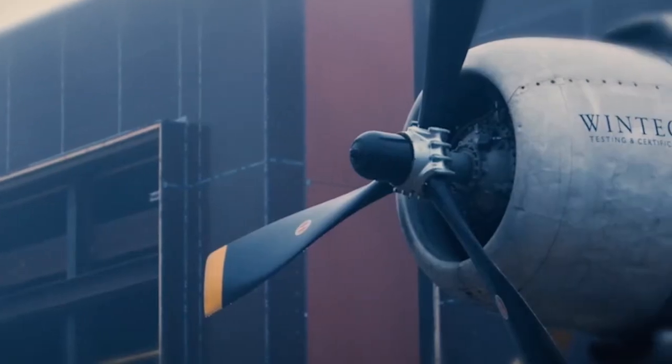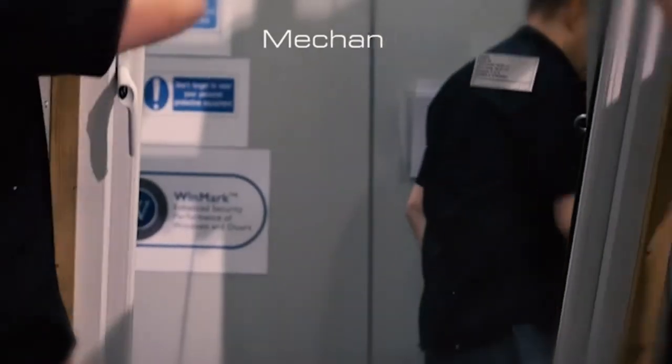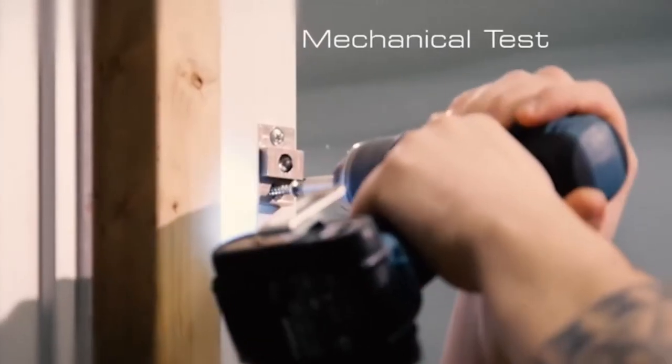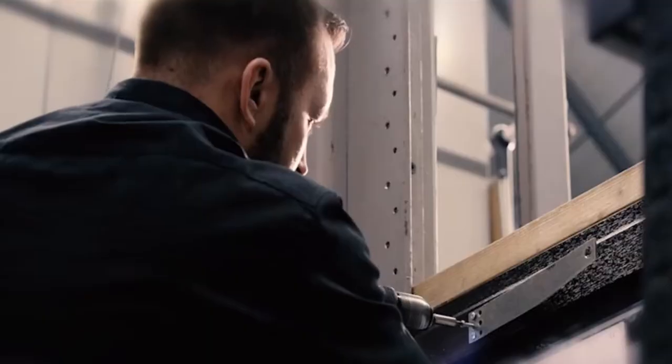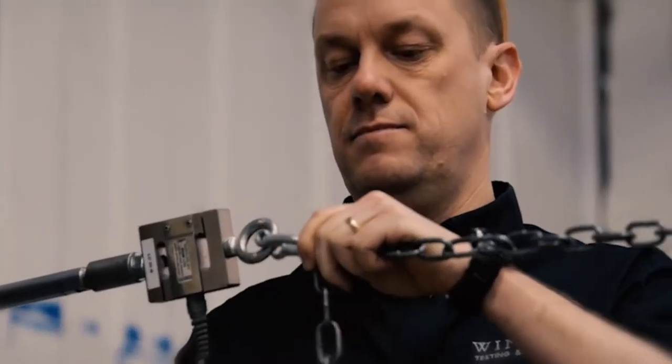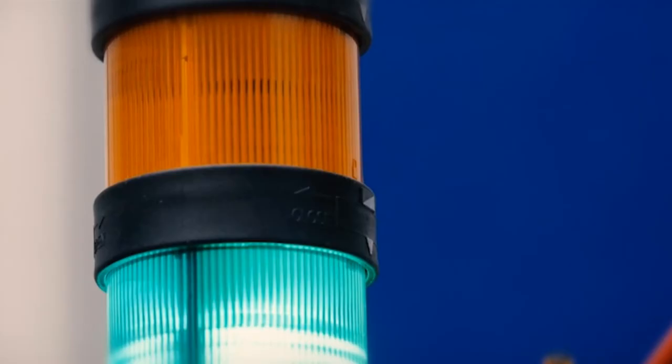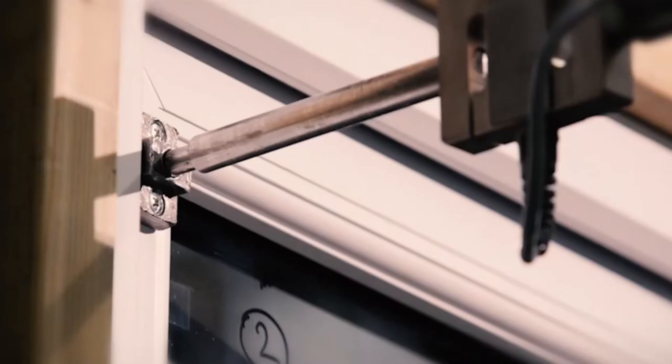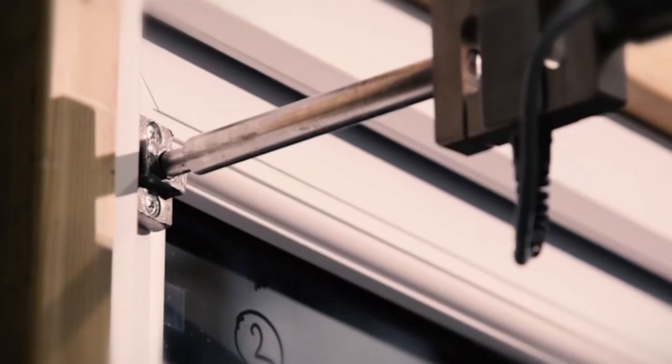Next up, Everest worked with the independent testers Wintech to run a few more rigorous tests. These guys really know how to put things through their paces using special equipment that piles on the pressure. To start, the mechanical loading machine pushes windows fitted with GrabLock with an incredible 1,000 Newtons of force. That's the equivalent of hitting it with a 100kg battering ram.